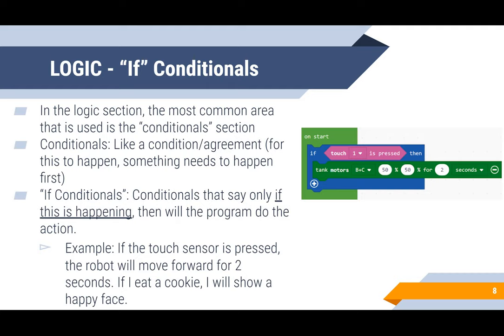The first conditionals that we're going to talk about are if conditionals, which say that only if this is happening, then will the program do the action. So to give an example: if the touch sensor is pressed, the robot will move forward for two seconds. A real world example would be: if I eat a cookie, I will show a happy face.